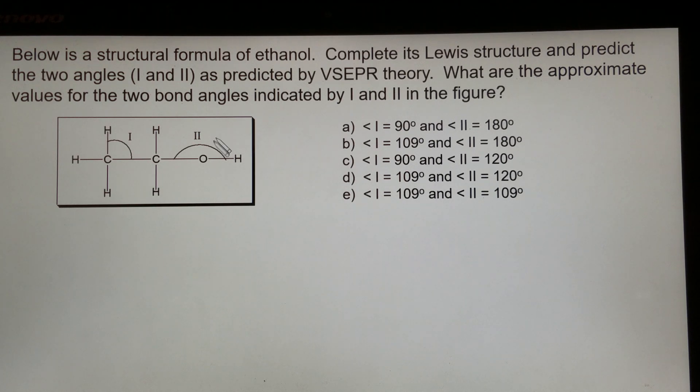So in order to find the bond angle, we need to find the molecular geometry first or the molecular shape first. Before we can find out the molecular shape, we have to find out the electron geometries. So then we want to make sure if there are lone pairs, we have to add those lone pairs.